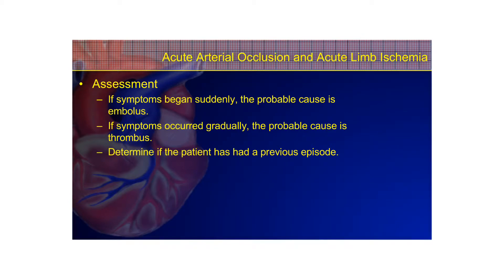When assessing these patients, gather an accurate history. If symptoms occurred suddenly, an embolus is the probable cause. If symptoms started gradually, you can suspect a thrombus. Find out if the patient has ever had a similar episode.